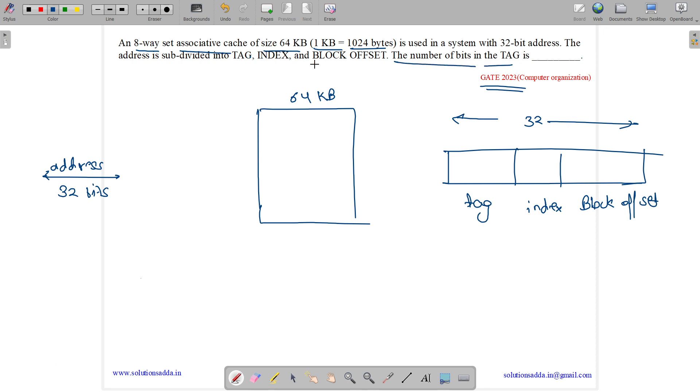The question asks for the number of tag bits. The cache memory is divided into blocks, and then some blocks are grouped to form a set. It is 8-way set associative, which means 8 blocks combined to form one set.